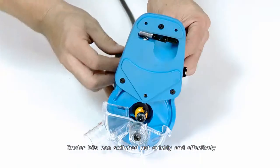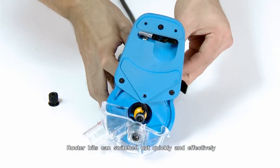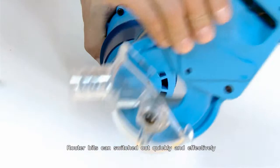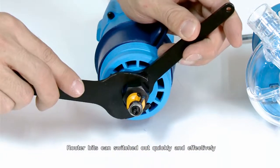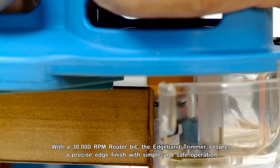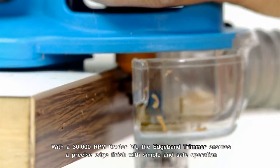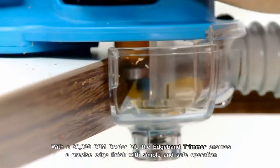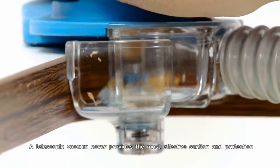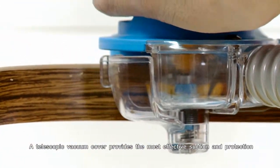Router bits can be switched out quickly and effectively. With a 30,000 RPM router bit, the Edge Band Trimmer ensures a precise edge finish with simple and safe operation. A telescopic vacuum cover provides the most effective suction and protection.